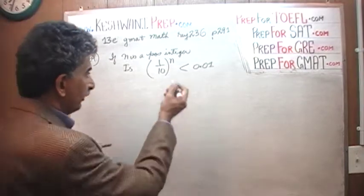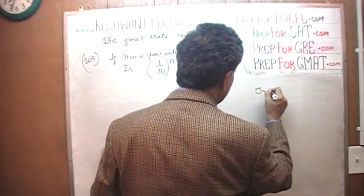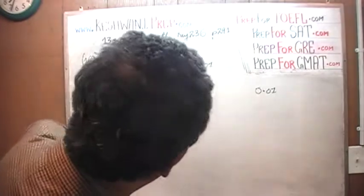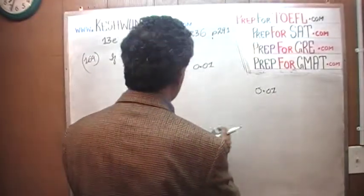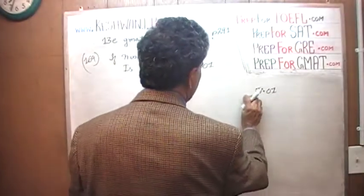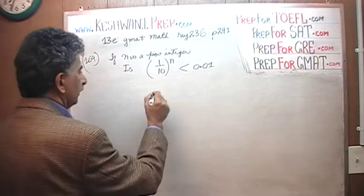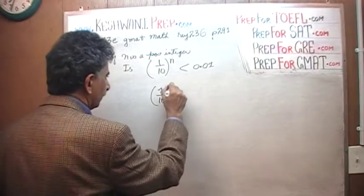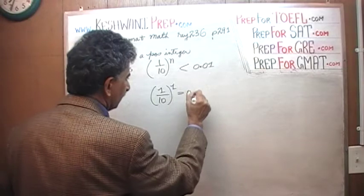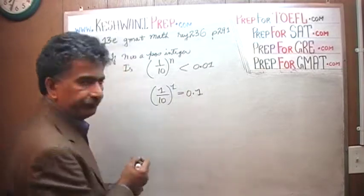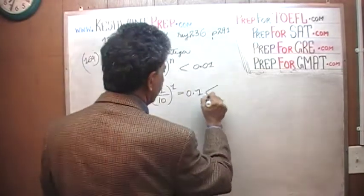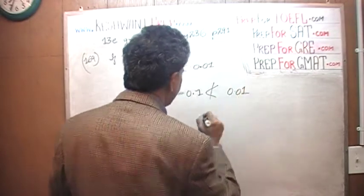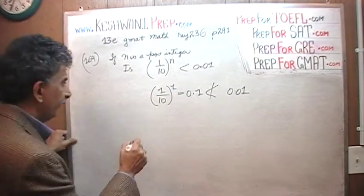So let's simplify it. 0.01 is what we are given — the question is, is this quantity less than that? We know that 1 over 10 raised to the first power is simply 0.1, and 0.1 of course is not less than 0.01.